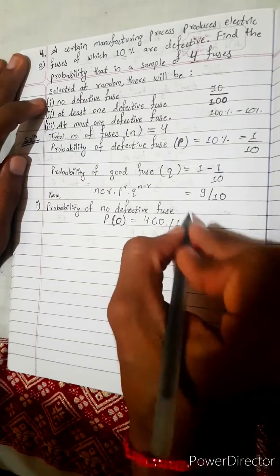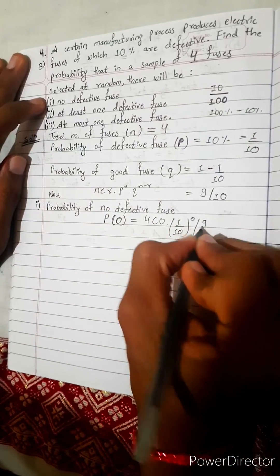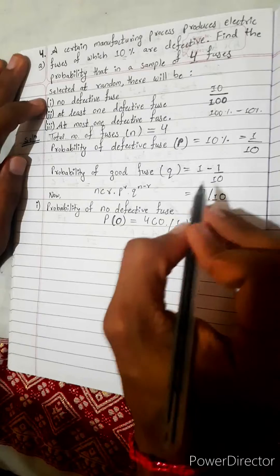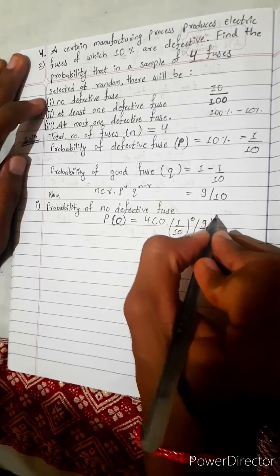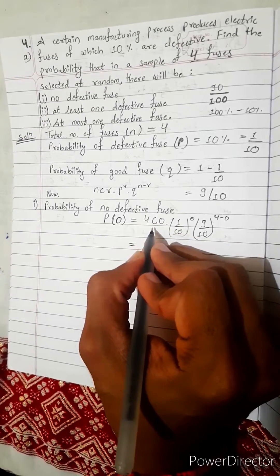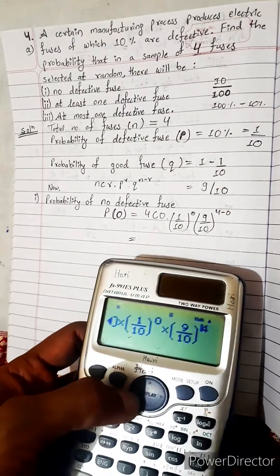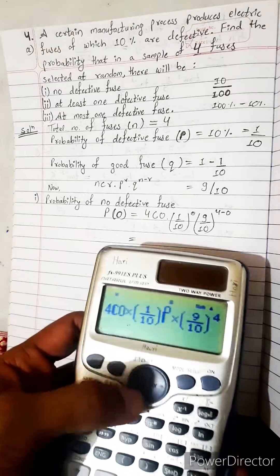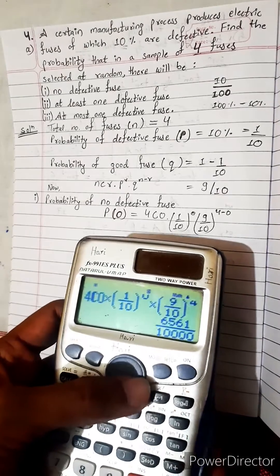R means 0. This is q, 9 by 10. n minus r is 4 minus 0. Let's write in one step. We don't use our mind, we use calculator, because we should save our time. Time is very valuable.